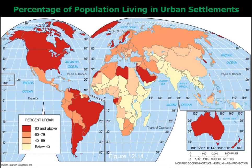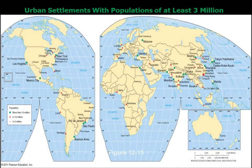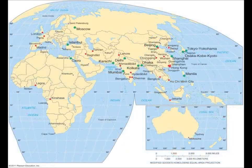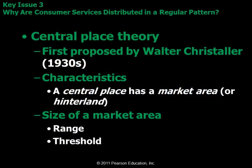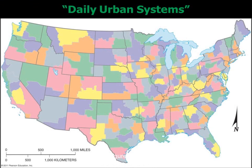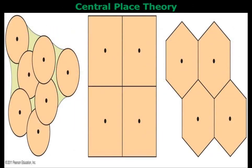Know what a central place is — for example, a market center. Know the idea of basic economic activities: a basic economic activity is something like a steel mill — you produce products for people outside of your community. Know that definition and how those questions go together. The Great Lakes region's most important activity is the production of durable goods.